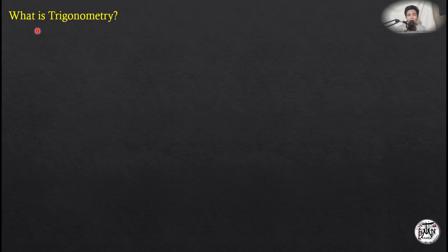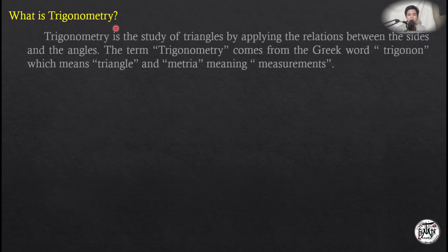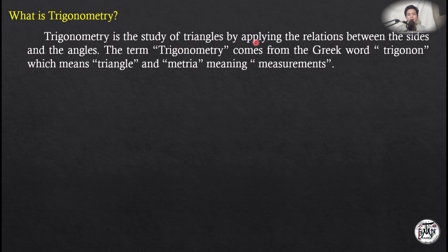So, what is trigonometry? Trigonometry is the study of triangles by applying the relations between the sides and the angles. The term trigonometry comes from the Greek word trigonon, which means triangle, and metron, meaning measurement.